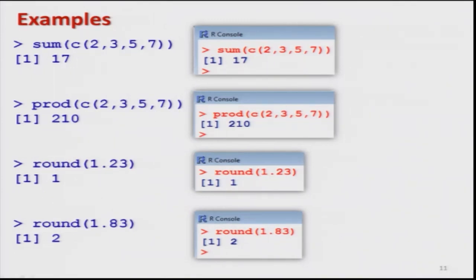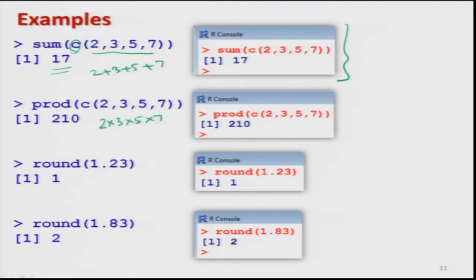To find the sum of 4 values 2, 3, 5, and 7 — meaning 2+3+5+7 — I combine all values inside a vector using the C command and use the function sum. The sum comes out to be 17, as shown in the screenshot. Similarly, for the product of 2, 3, 5, and 7 — meaning 2×3×5×7 — I combine all values using C and use the function prod. The result is 210.